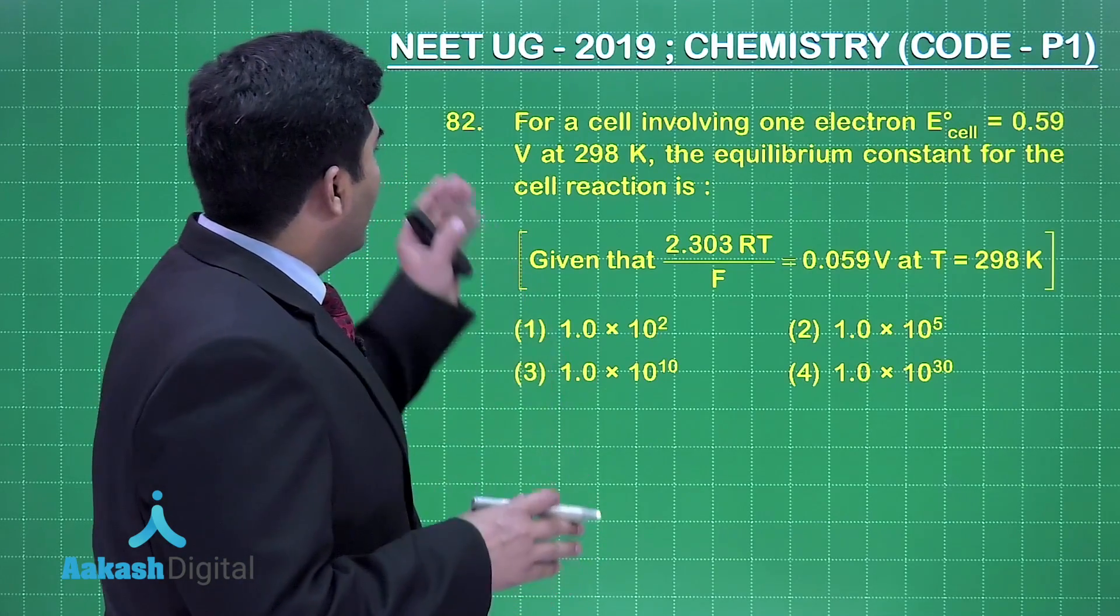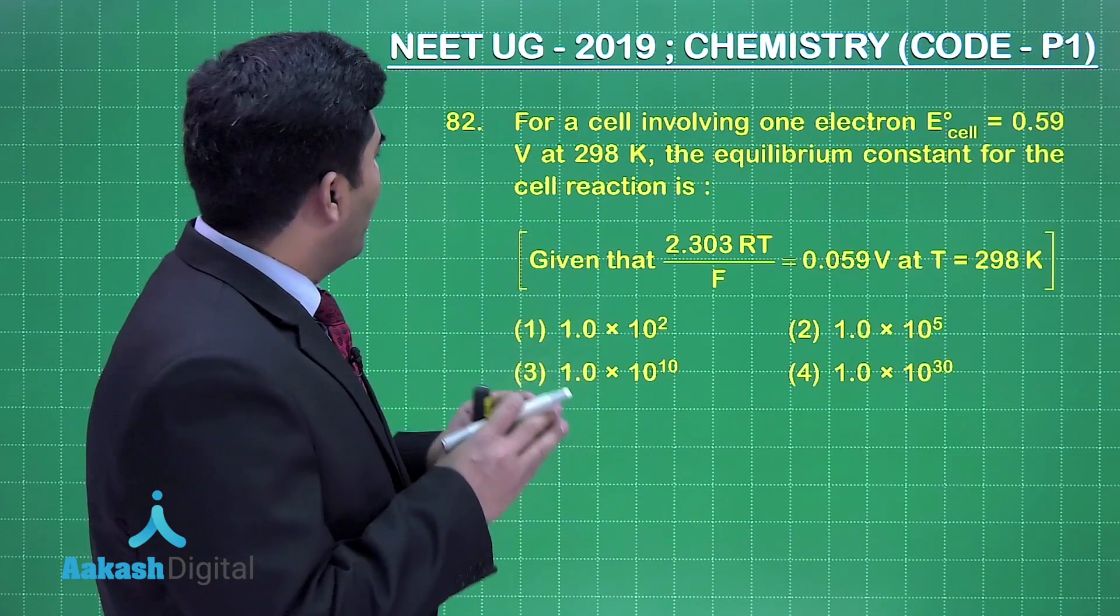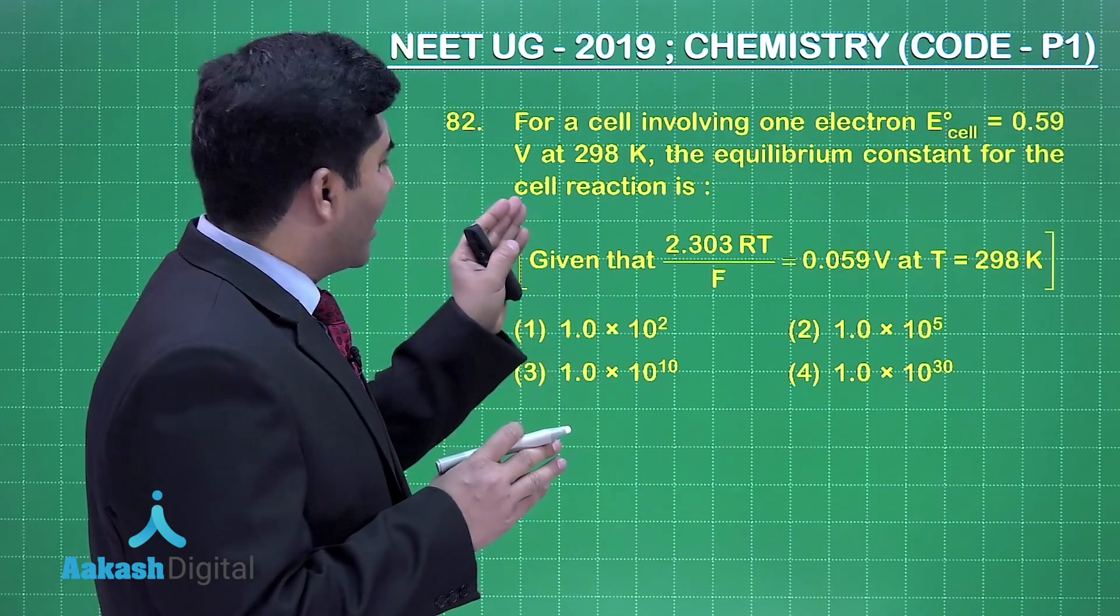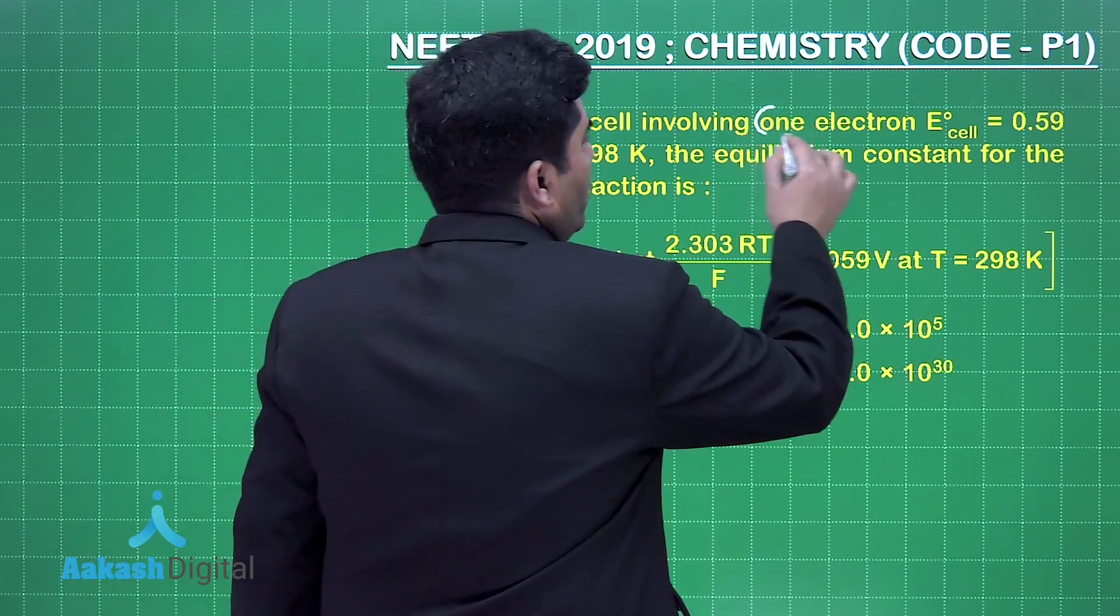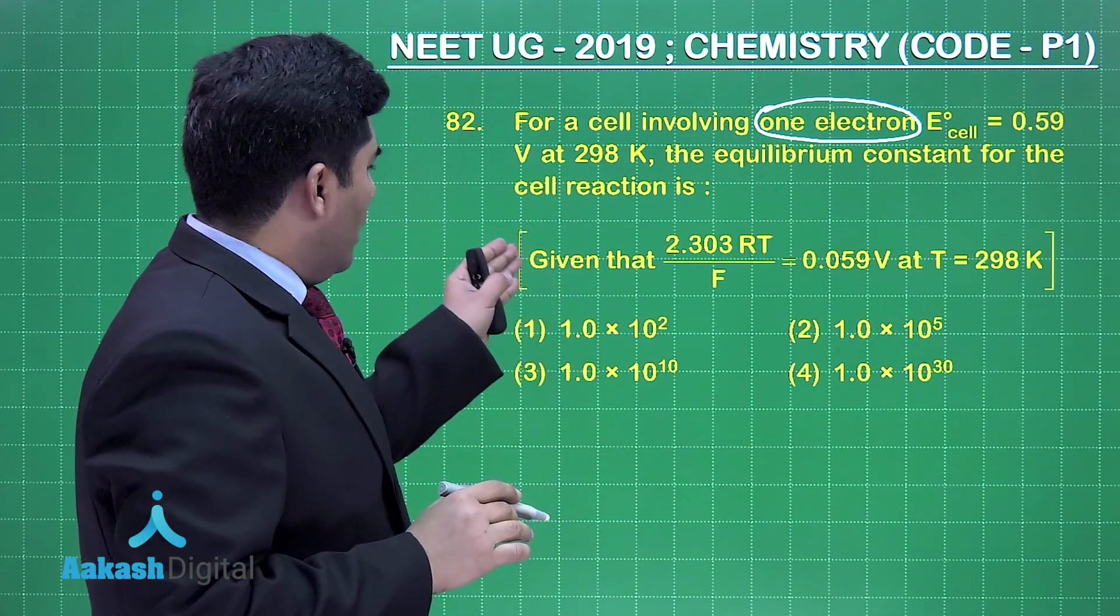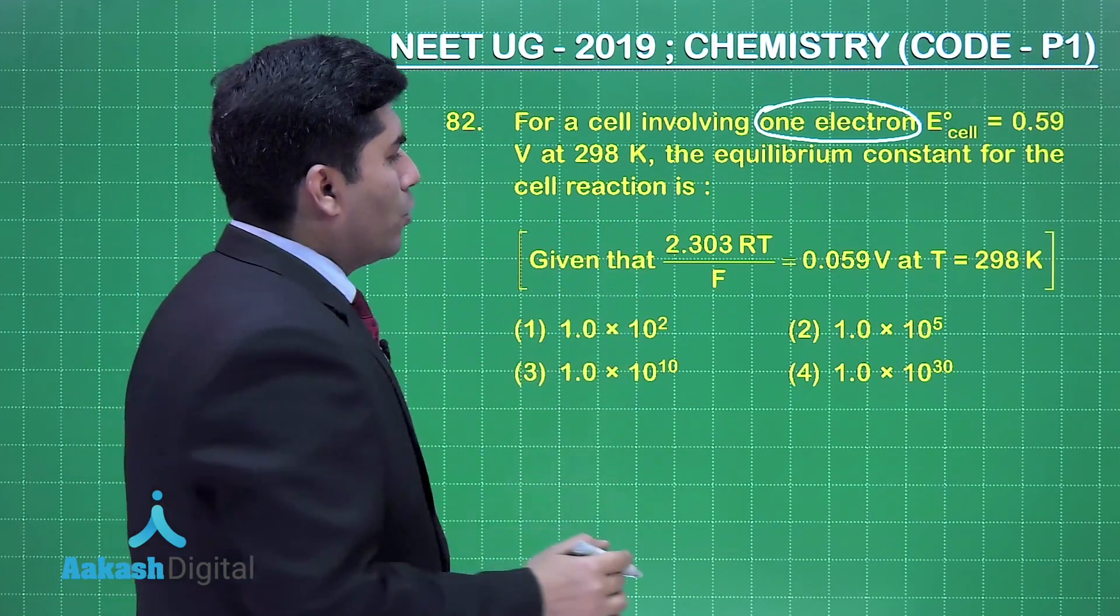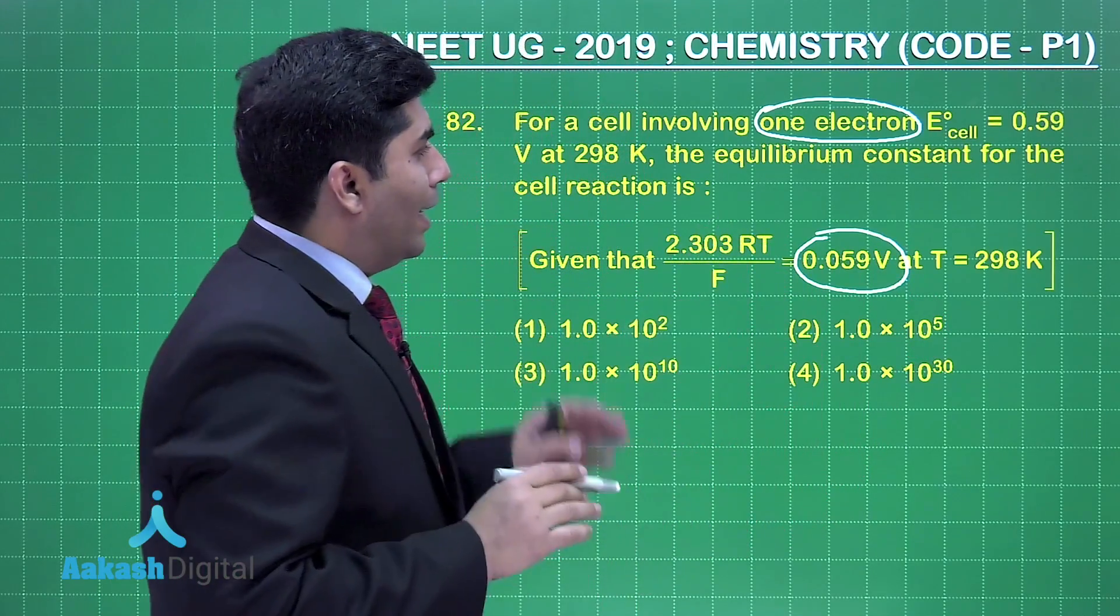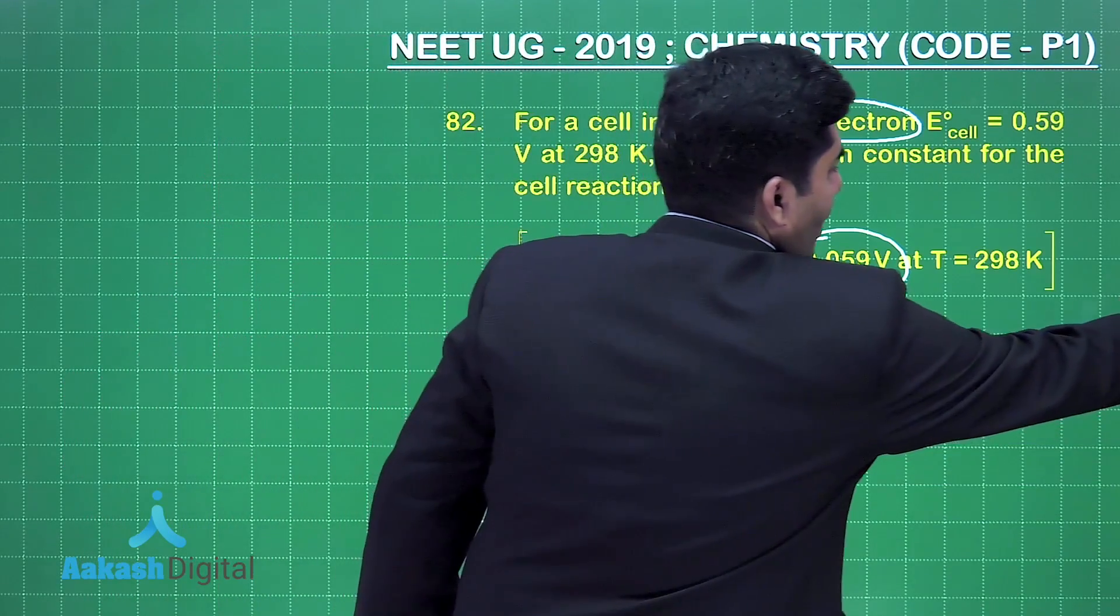In this question, for a cell involving one electron, E°cell = 0.59V at 298K, the equilibrium constant for the cell reaction is asked. What is given to us: the number of electrons involved in the cell is one, and the value of 2.303RT/F is also given, equal to 0.059 volts at 298K. We need to find the value of Kc. Let's start the solution.